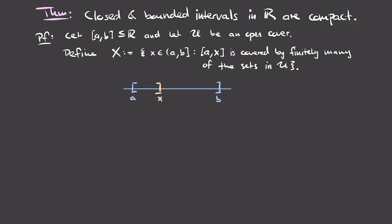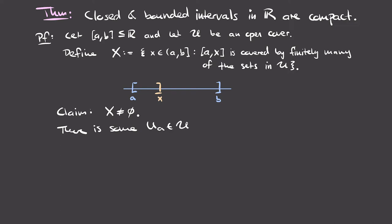We'll take the supremum of X — the largest element — and show it must equal b, seeing how far we can extend closed intervals still covered by finitely many sets. First, we need to show capital X is non-empty. The point a must be contained in some set U_a from our open cover U, since U covers the entire interval [a, b].